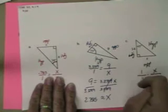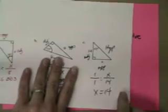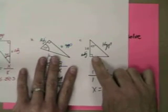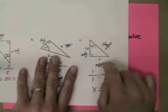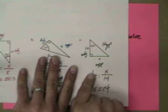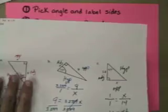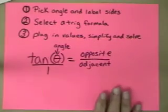Same thing. Pick angle, label triangle, plug in the values. Remember, this is the tangent of 73. Cross-multiply and solve. Same thing here. Plug in values. I mean, sorry. Pick the angle. Label the sides. Plug in your values. Where they go, the tangent of 45 is 1. Cross-multiply and that gives you that value.